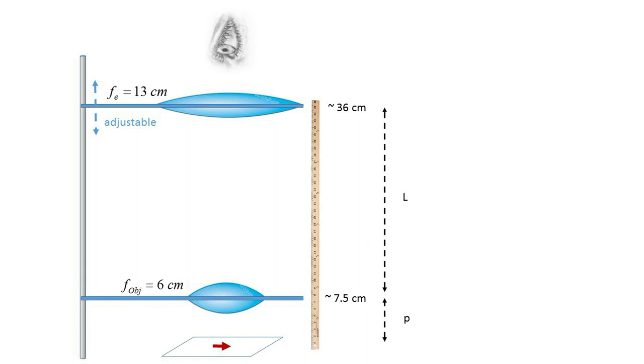To build your microscope, place the printed object arrow on the tabletop and place a 6 cm focal length objective lens in a lens holder at a height above this object a little beyond the 6 cm objective focal length. Place an eyepiece lens with a 13 cm focal length in alignment with the object and objective lens and adjust the vertical location of the eyepiece to yield a clear magnified image as viewed from above. You will want to record the height of both lenses above the tabletop.